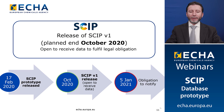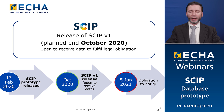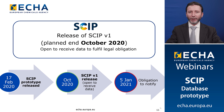The SCIP database will be released in October 2020 and will then be open to receive data to fulfill your legal obligations. However, your obligation only starts on the 5th of January 2021, at the time that you are supplying articles and products that contain a candidate list substance.